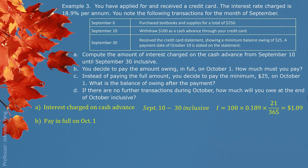Part B: You decide to pay the full amount owing on October 1st. The due date is October 10th, so before the due date you do not have to pay interest on the regular purchase of $250. You need to pay $250 for the purchase, plus the $100 cash advance returned, plus $1.09 in interest. The total payment on October 1st should be $351.09.